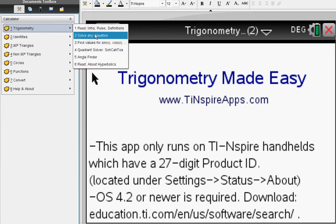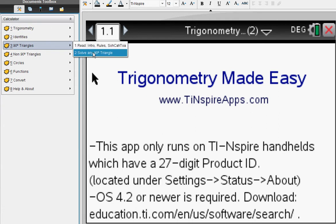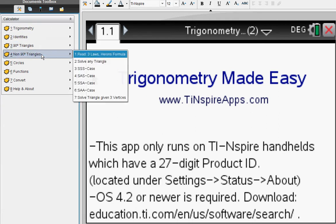Here's an introduction: You can solve any equation, evaluate sine, cosine, and tangent in each quadrant, use the angle finder, check identities, and find all the trig identities. You can solve 90-degree triangles step-by-step and, of course, solve non-90-degree triangles step-by-step as well. You can see the familiar cases SSS, SAS, SSA, etc., and you can also solve triangles given the three vertices.